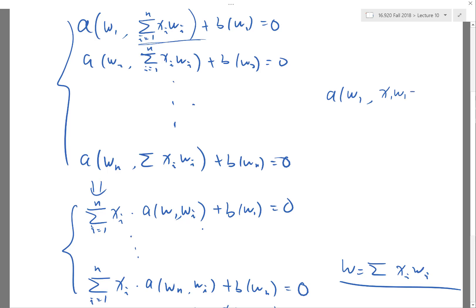For example, A(W1, X1*W1 + X2*W2) equals—let's split that apart—A(W1, X1*W1) plus A(W1, X2*W2). Then we can move them out: this equals X1 times A(W1,W1) plus X2 times A(W1,W2).